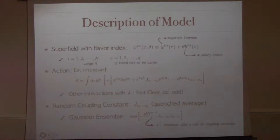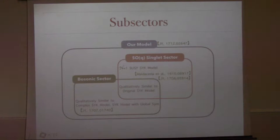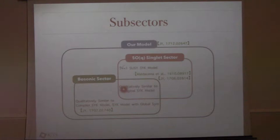The random coupling constant follows a Gaussian distribution. Our model has an SO(Q) sub-sector: the SO(Q) singlet sector corresponds exactly to the N=1 supersymmetric SYK model, and the bosonic sector is very similar to the complex SYK model, though since Q is odd it is not exactly the same.